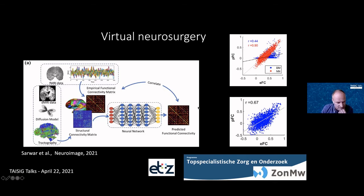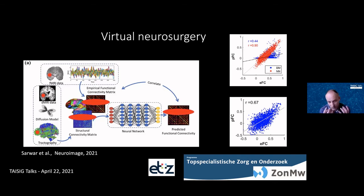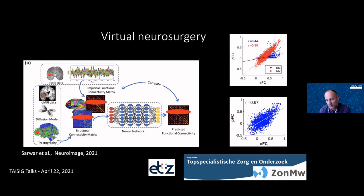That's where virtual neurosurgery comes in: we can virtually lesion the structural connectome, modulate the size of the lesion, and see what size shows the optimal balance between maximally removing the tumor and minimizing cognitive deficits. These results are summarized in a risk map that can guide neurosurgeons on safe boundaries during tumor resection.